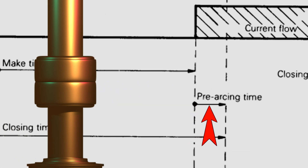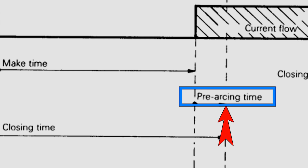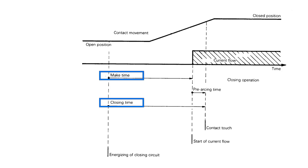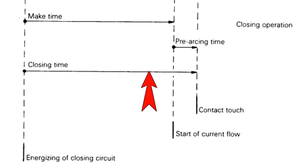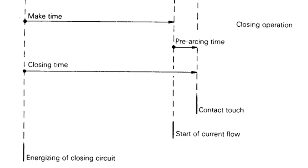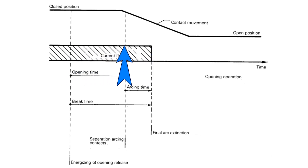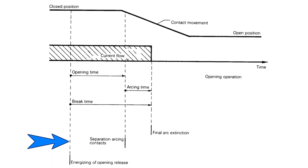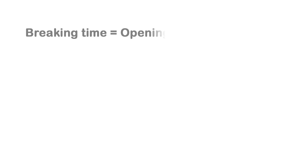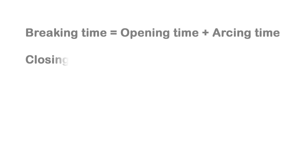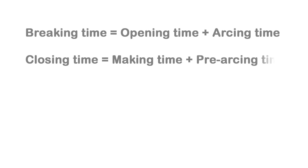The time from arc initiation to the physical contact is called the pre-arcing time. Therefore, the closing time is the sum of making time and pre-arcing time. Closing time is defined as the interval between the energization of the closing circuit and the moment the moving and fixed contacts physically touch. Breaking time is the total time taken to completely interrupt the current after the opening release trip coil is energized. So: breaking time equals opening time plus arcing time; closing time equals making time plus pre-arcing time.